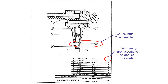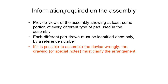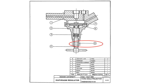We've got the total quantity in the parts list and from our drawing we are easily able to locate both lock nuts. Our next point is: if it is possible to assemble a device wrongly, the drawing or special notes must clarify the arrangement so that it is not possible from the drawing to assemble the device incorrectly. If you think about a nut, it can go on two ways — you can put it on one way or rotate it 180 degrees and put it on the other way.